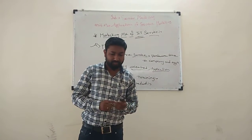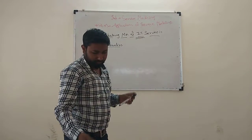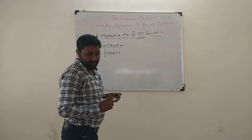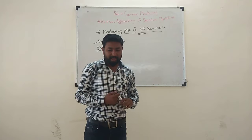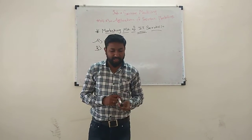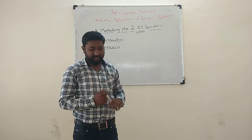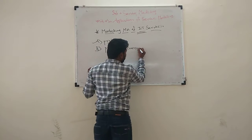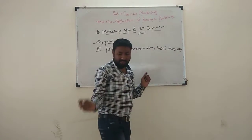Next is Price. There are many models used to determine the price of software service. The line-of-code model is the most used model, where the price depends upon the number of lines and return programs. The function point model is based on the number of inputs. The price is determined by travel costs, legal charges, consultancy, and professional charges.